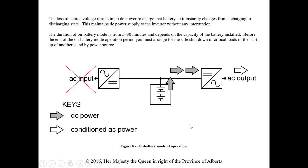If we lose AC, the system instantly changes from charging to discharging state — the DC battery becomes the actual supply to the inverter, and we still get AC output to the load. The duration of on-battery mode is 5 to 30 minutes, depending on battery bank capacity. Before the end of that period, you must arrange for a safe shutdown of critical loads or startup of another standby power source such as a backup generator.